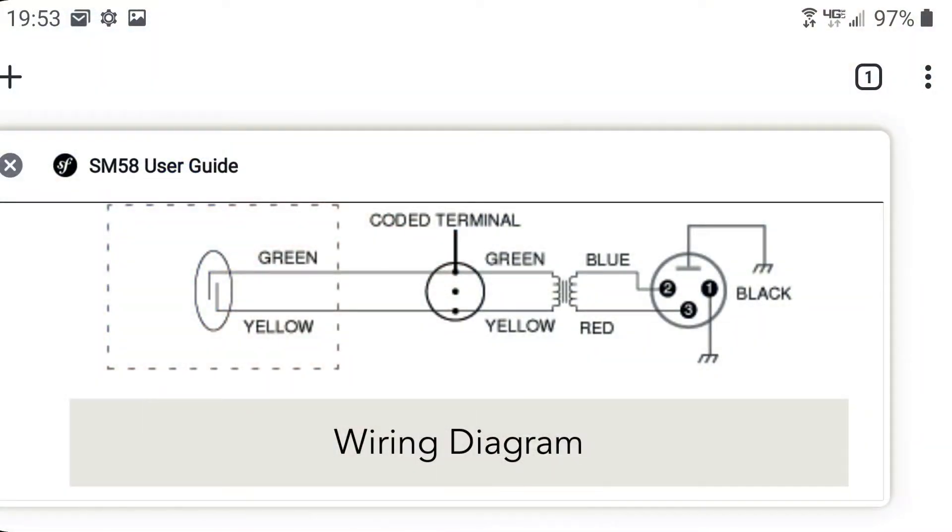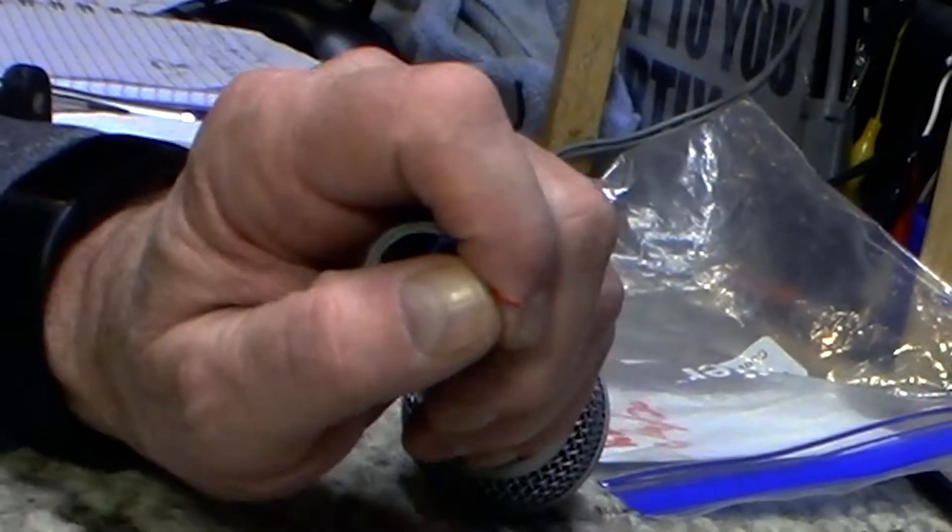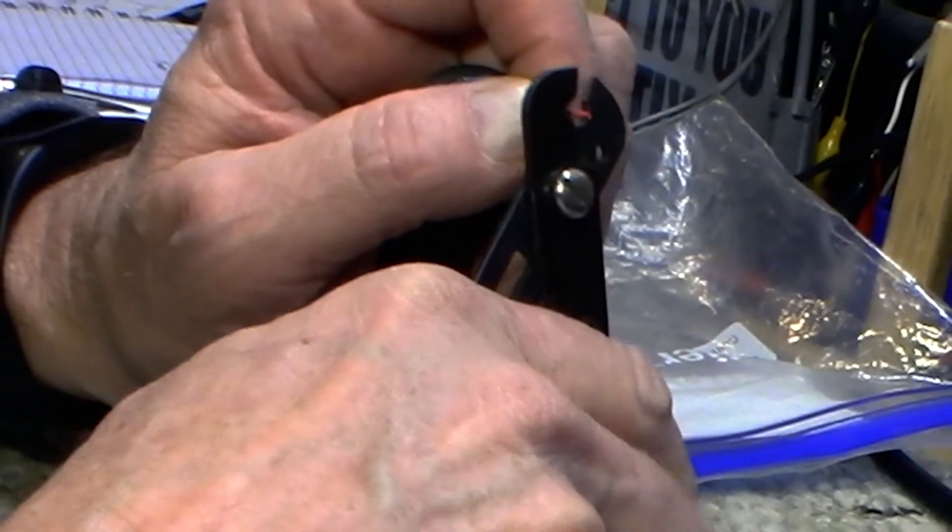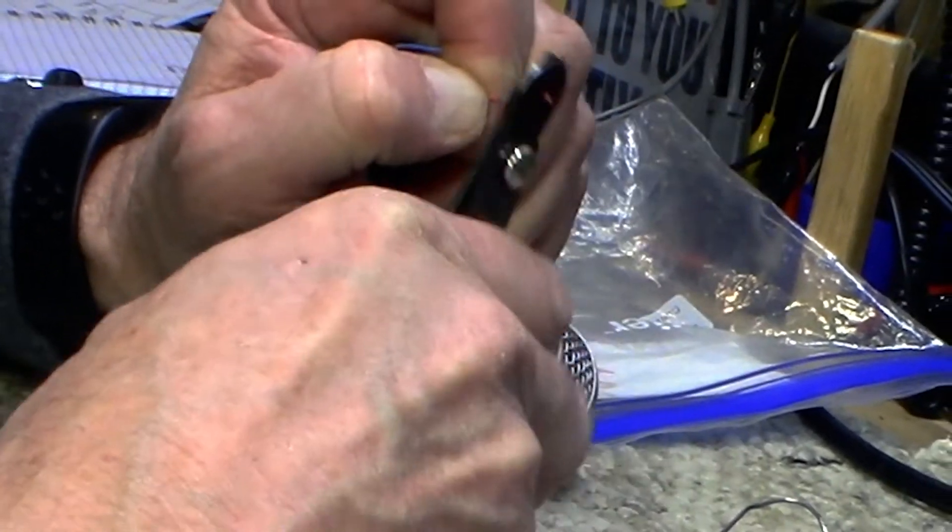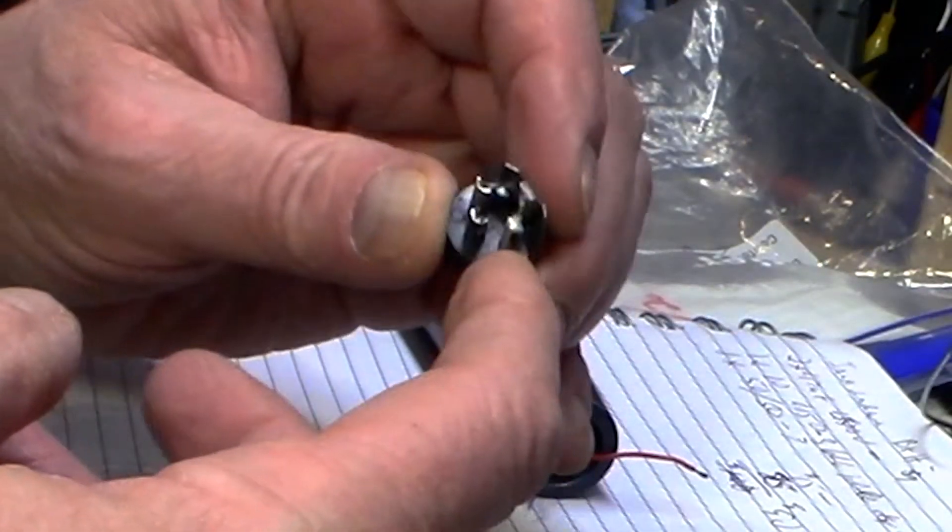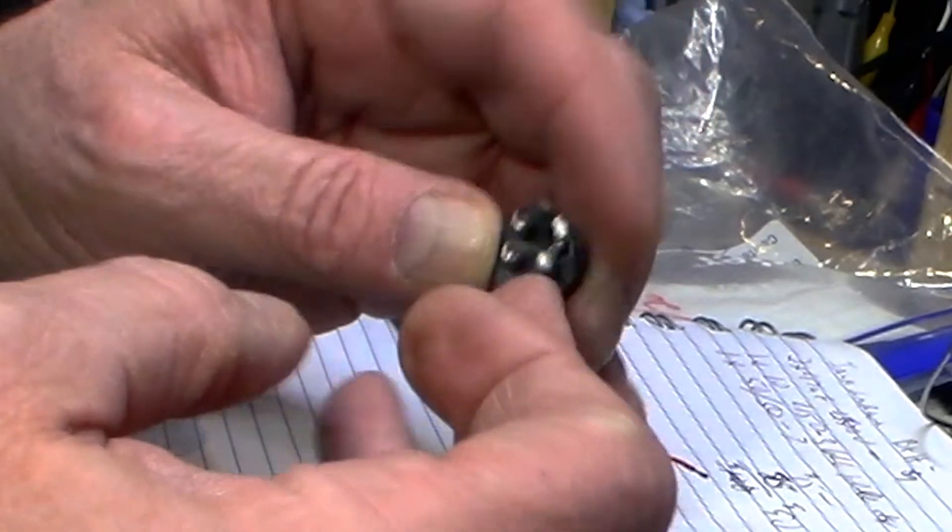Before we solder anything, one of the first things we need to do is make sure we have prepped the wires properly for soldering. I'm going to very carefully strip a little bit off the end. We don't need a whole lot of bare wire here, and then we're going to tin it.